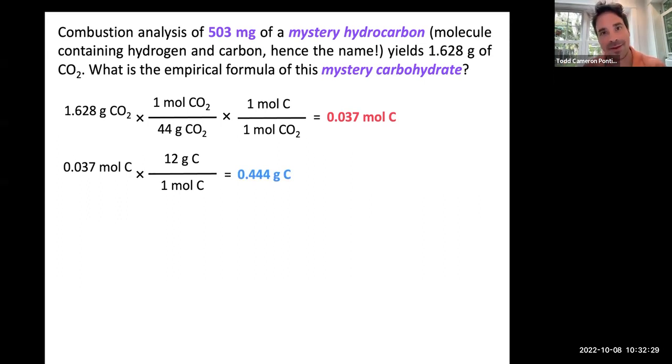It turns out that in our original hydrocarbon, 0.444 grams of it were carbon. We're told that we started with 503 milligrams, which is 0.503 grams of our original hydrocarbon. So, our molecule that consisted of carbon and hydrogen had a mass of 0.503 grams. And of that, 0.444 of it were carbon. So, if we subtract that 0.444, we'll end up getting the mass of hydrogen in that molecule.